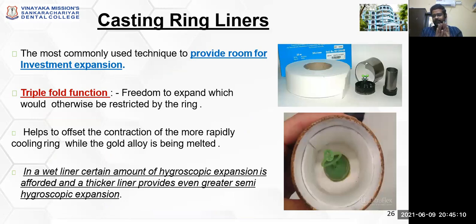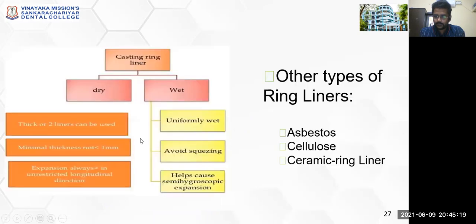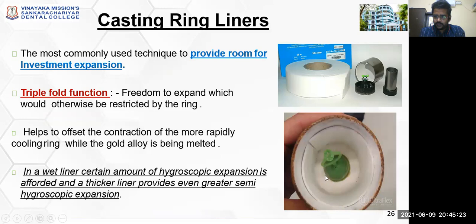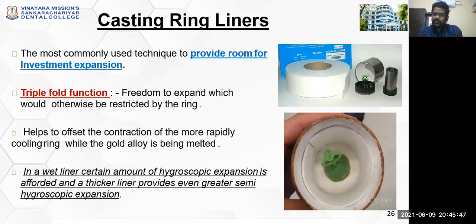You also have casting ring liners. The casting ring is assembled along with the assembly where the crucible former holds the wax pattern. A small thin paper-like material is placed around the walls of the casting ring — this is called the casting ring liner. It is available as a roll; you cut it to the shape of the casting ring and attach it to the walls. It is the most commonly used technique to provide room for investment expansion. Once the investment material is poured into this space, the liner — whether wet or dry — provides sufficient room for the setting expansion of the investment material.